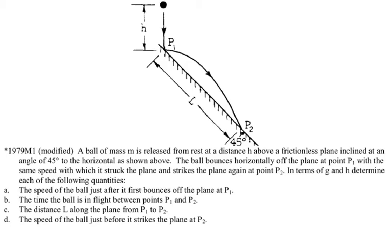This is an AP Physics B 1979 AP exam question. A ball of mass M is released from rest at distance H above a frictionless plane inclined at an angle of 45 degrees to the horizontal. The ball bounces horizontally off the plane at point P1 with the same speed with which it struck the plane, and then strikes the plane again at point P2.